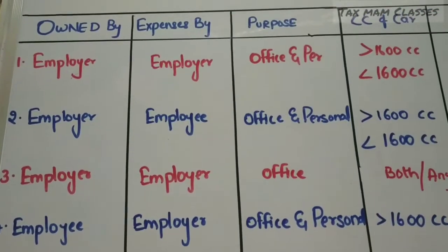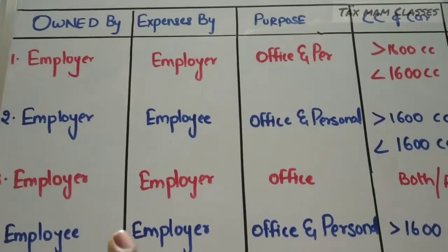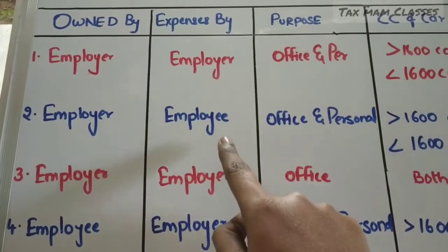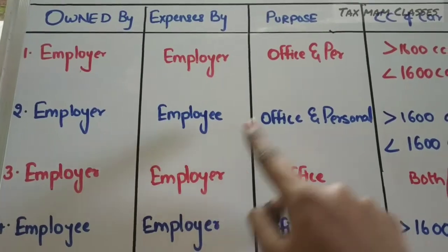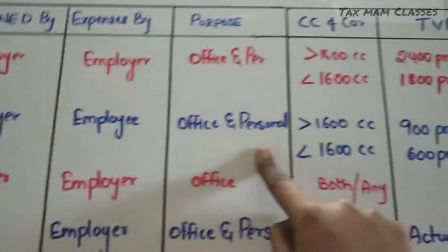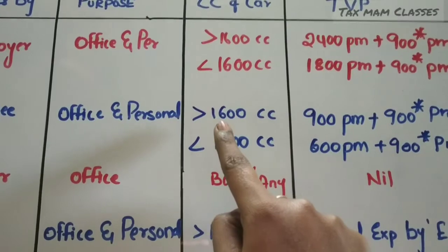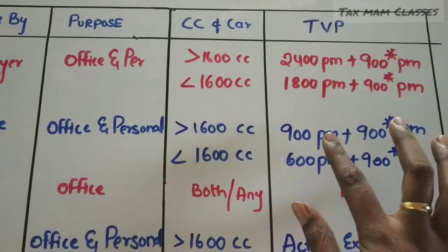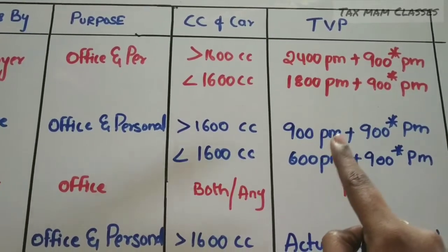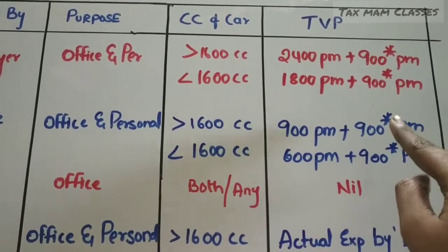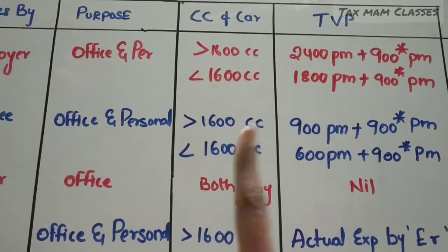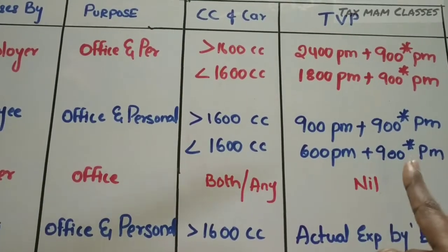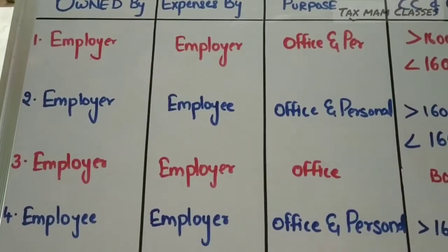In the second situation, the car is owned by the employer but the expenses are met by the employee, and the purpose is office and personal. If it is a big car — more than 1600 CC — the taxable value in the hands of the employee is ₹900 per month plus ₹900 if a driver is employed. If it is a small car — less than 1600 CC — it is ₹600 per month plus ₹900 only if a driver is employed.